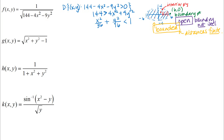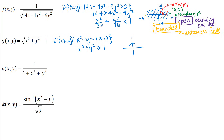For this next function, the domain is the set of all (x, y) such that the expression inside the radical is greater than or equal to zero. Since it's not in the denominator, it's okay if it equals zero. Rearranging the inequality gives x² + y² ≥ 1. The equation x² + y² = 1 is a circle of radius 1. I drew it solid because the inequality includes the 'or equal to' part, so the circle is included.